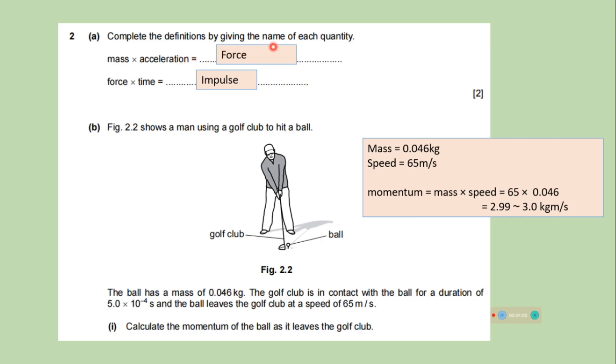Complete the definitions by giving the name of each quantity. Mass multiplied by acceleration is force. Force multiplied by time is impulse. This video shows a man using a golf club to hit a ball. The ball has a mass. The golf club is in contact with the ball for a duration of 5 into 10 to the power minus 4 seconds. And the ball leaves the golf club at a speed of 65 meters per second.